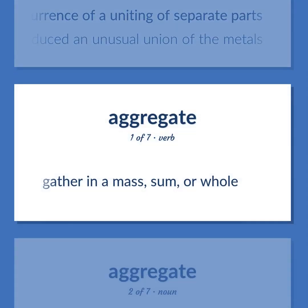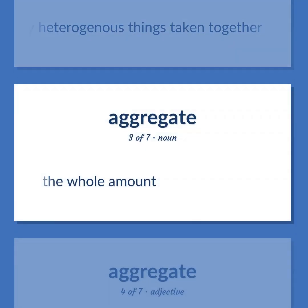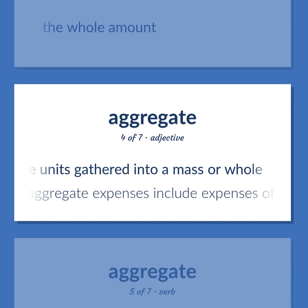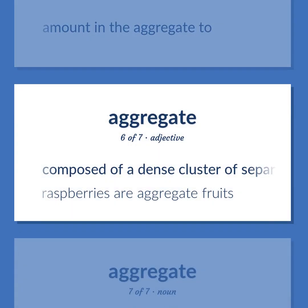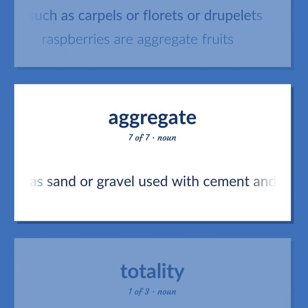Aggregate: Gather in a mass, sum, or whole. A sum total of many heterogeneous things taken together. The whole amount. Formed of separate units gathered into a mass or whole — aggregate expenses include expenses of all divisions combined for the entire year. Amount in the aggregate too. Composed of a dense cluster of separate units such as carpels or florets or druplets — raspberries are aggregate fruits. Material such as sand or gravel used with cement and water to make concrete, mortar, or plaster.